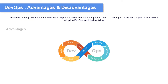Let's start with some of the advantages. The first one on my list is quick development and deployment. If you are looking for a development approach that will allow you to quickly develop your applications and deploy them in production for your customers to have access to the features, DevOps is the right choice.